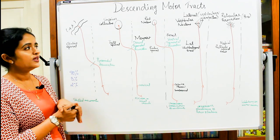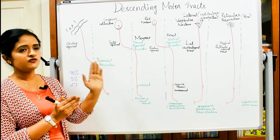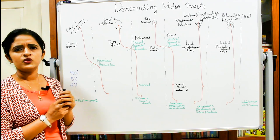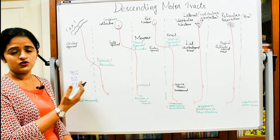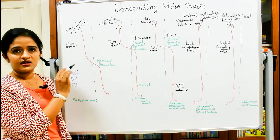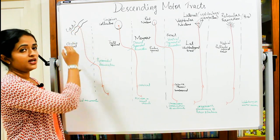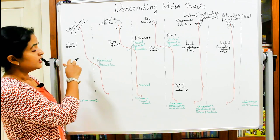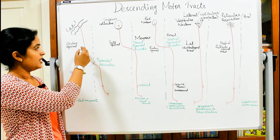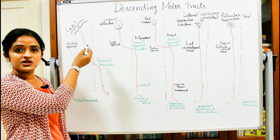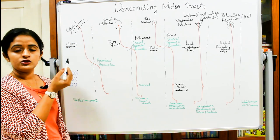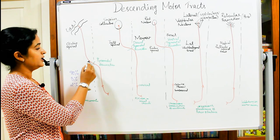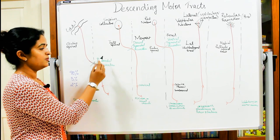The first and most important descending tract is the corticospinal tract. From the word itself, 'cortico' tells us it arises from the cerebral cortex, chiefly from areas 4 and 6, and sometimes from areas 3, 1, 2, and other parts. The fibers descend on the same side, passing through the posterior limb of the internal capsule, then through the cerebral peduncle, then through the pons, until reaching the medulla. Once entering the pyramid of the medulla, they decussate to the opposite side - known as pyramidal decussation.